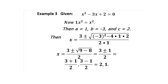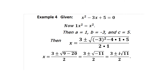Example: x² − 3x + 2 = 0, so a = 1, b = −3, c = 2. Plugging in: x = (3 ± √(9 − 8)) / 2 = (3 ± √1) / 2 = (3 ± 1) / 2. This gives x = (3+1)/2 = 2 and x = (3−1)/2 = 1.